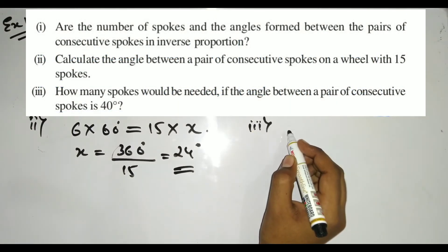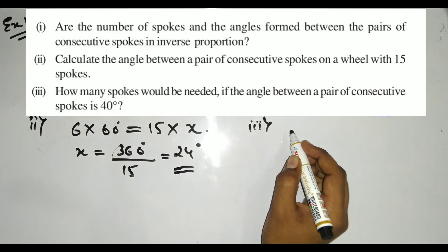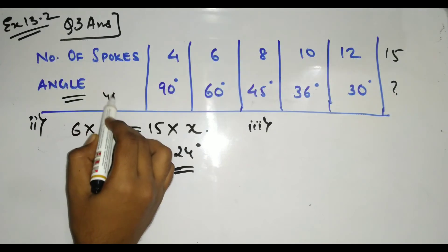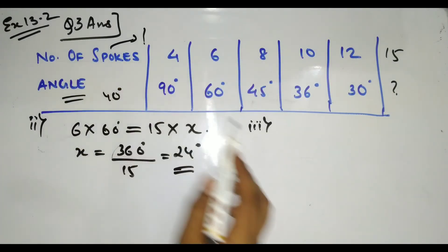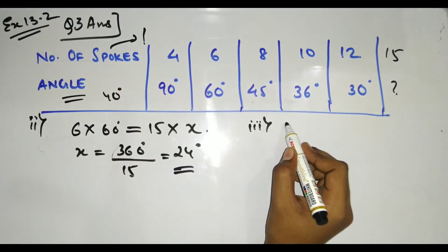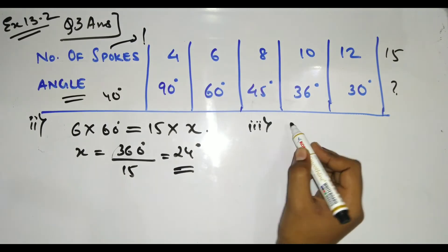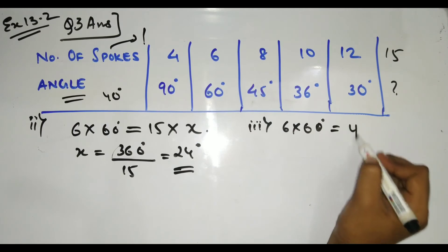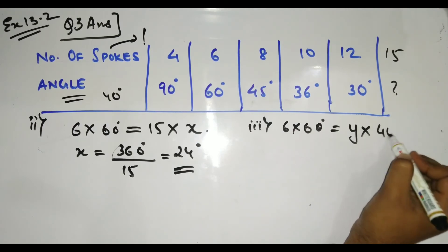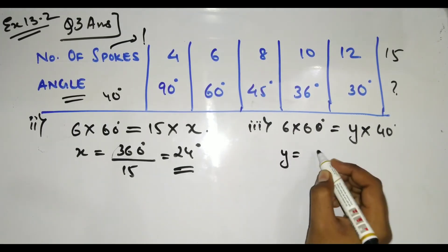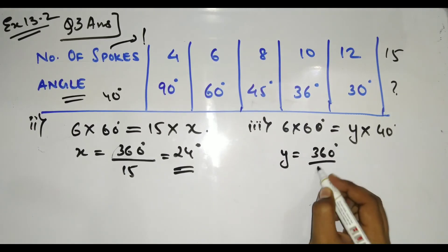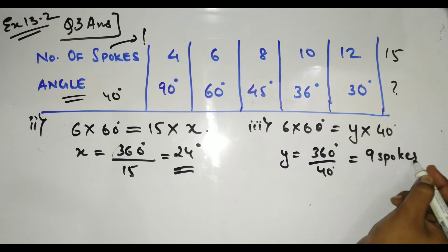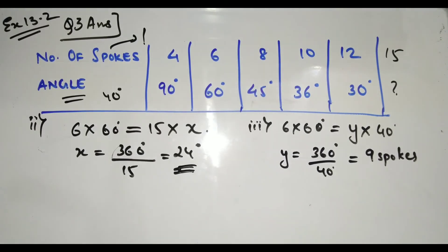For the third part: if the angle between two consecutive spokes is 40°, we need to find the number of spokes. Using 6 × 60 = y × 40, we get y = 360 ÷ 40 = 9 spokes.